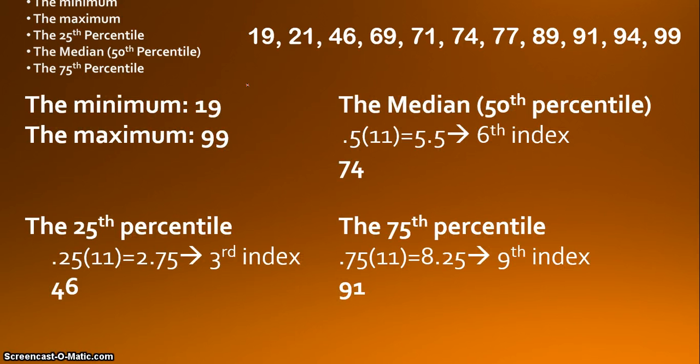Bam! A lot of numbers, right? Don't worry, I'm going to walk you through each one. The minimum, the smallest number. Well, the smallest number in our data set is 19. Nothing too difficult there.